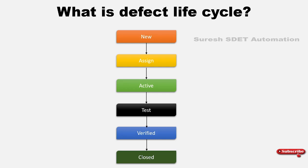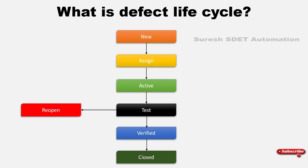There is another flow where the developer provides a fix, but when it reaches testing, the tester identifies that the defect is not fixed. In that case, during the testing phase, the tester will reopen the defect and put it back to 'Active' status, so the developer again reviews it and brings a new fix. Then it goes to test again, then to verified, then to closed. This cycle can repeat.